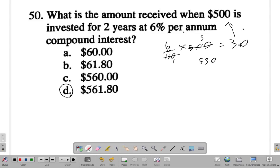Then the $60 would add to $500 to give you $560. But compound interest grows faster than simple interest, so you get more for compound interest. So it has to be more, so the answer is D.